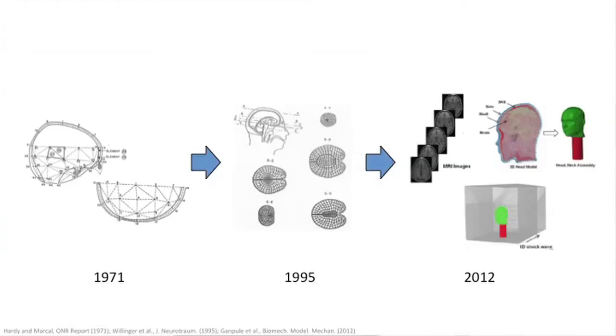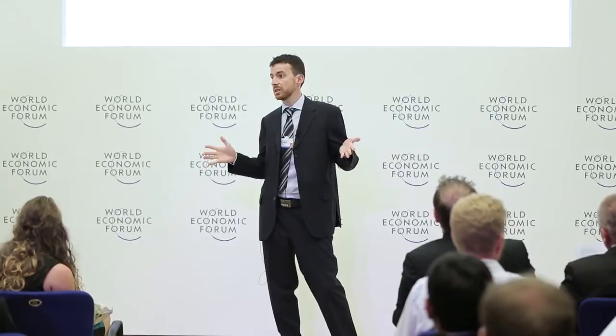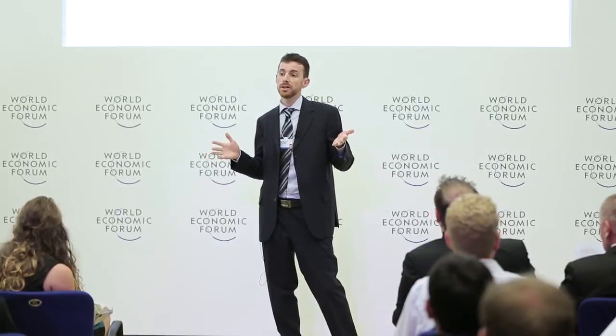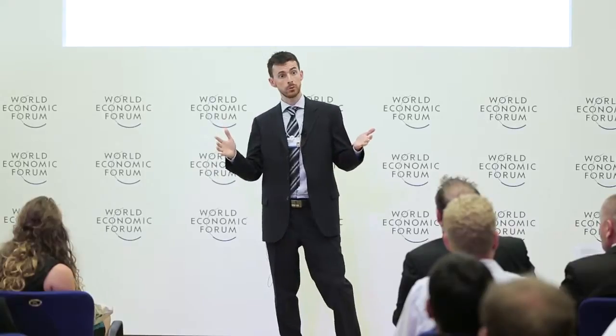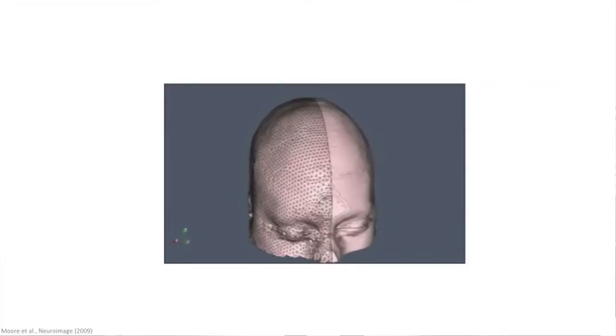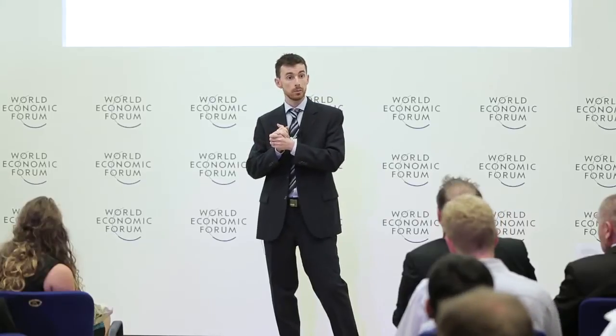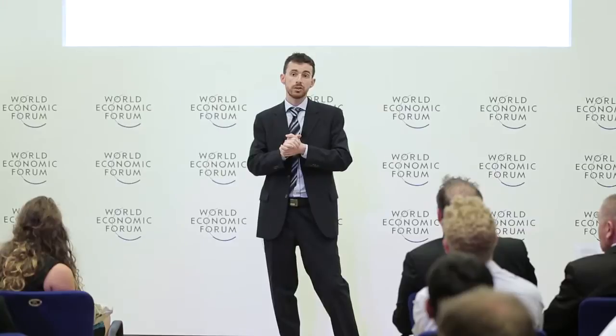To tackle this challenge, people have been using different means, and one of them is computational modeling. We went from 1970s rough head models to very advanced patient-specific MRI and CAT scan-based head models that can be put in different situations. The technique used is called the finite element method, in which you take your real geometry, discretize it into small elements, and associate mechanical properties — stiffness, strength, or ductility — to each one of these elements.